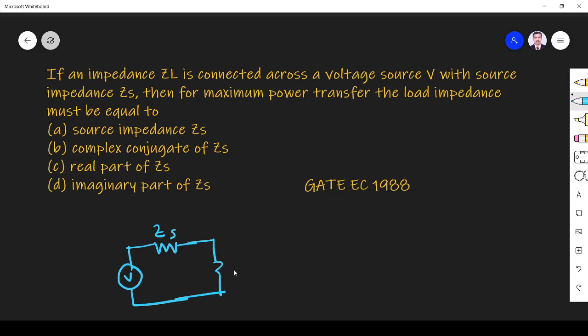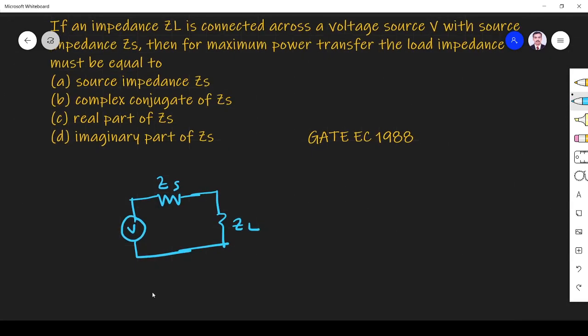So what is the condition for maximum power transfer they are asking? We know that maximum power will be transferred from source to load when load resistance is equal to source resistance. But if they give the impedance which is complex in nature, what will happen?